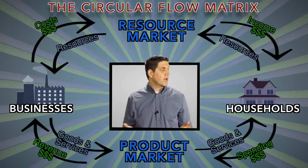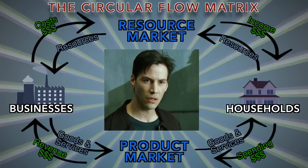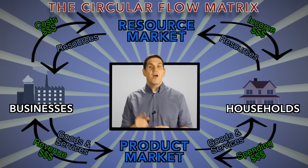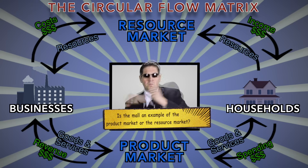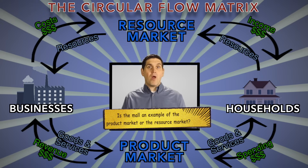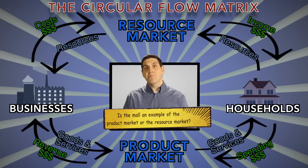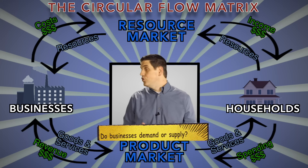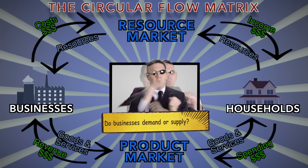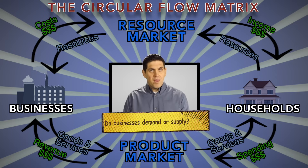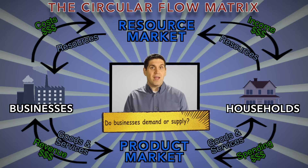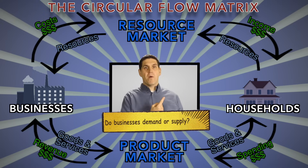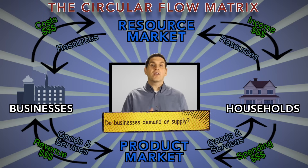So this is it — the circular flow matrix that shows how a market economy works. Let me ask you a few questions to see if you really understand the matrix. First question: is your local mall an example of the product market or the resource market? It's both. Some people are there to buy products in the product market, but some people are working or trying to get a job, and that's a resource market. So products, resources, and money are all being exchanged. Next question: do businesses demand or supply? The answer is both. They demand in the resource market, but they supply in the product market. Households, on the other hand, demand in the product market, and they supply in the resource market. So both businesses and households are supplying and demanding.